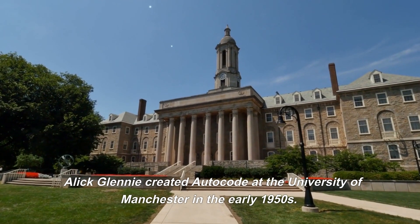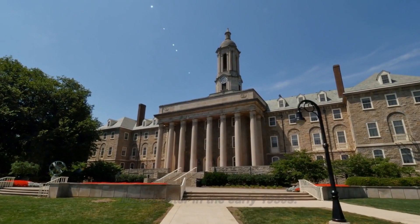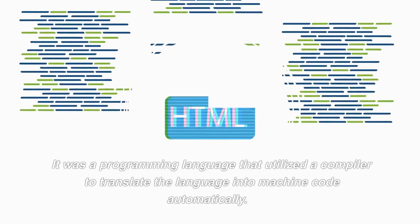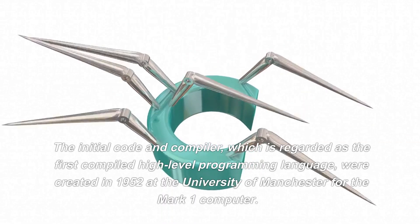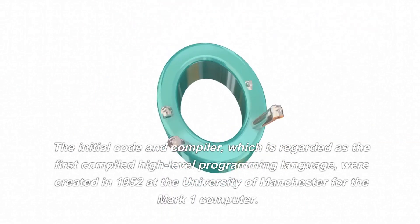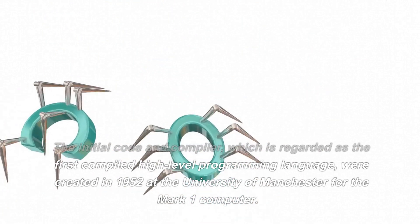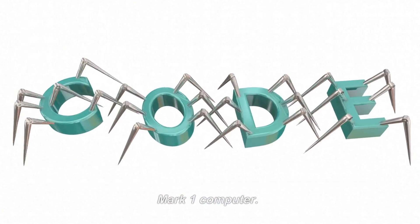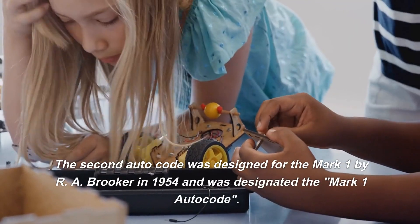Alick Glennie created AutoCode at the University of Manchester in the early 1950s. It was a programming language that utilized a compiler to translate the language into machine code automatically. The initial code and compiler, regarded as the first compiled high-level programming language, were created in 1952 at the University of Manchester for the Mark I computer.